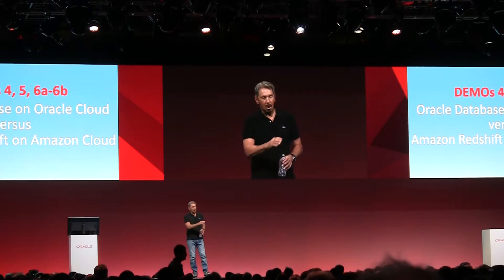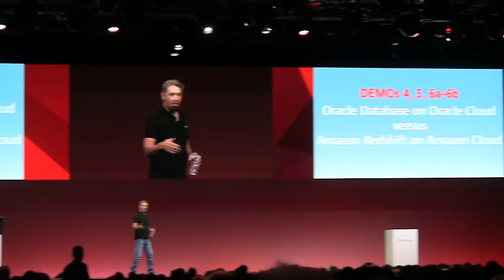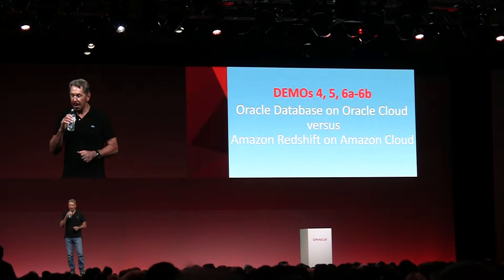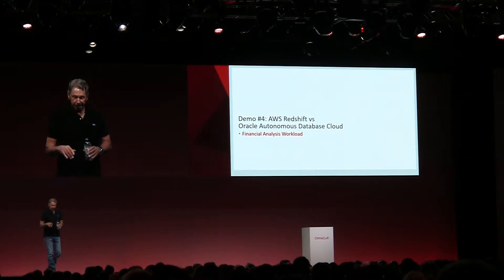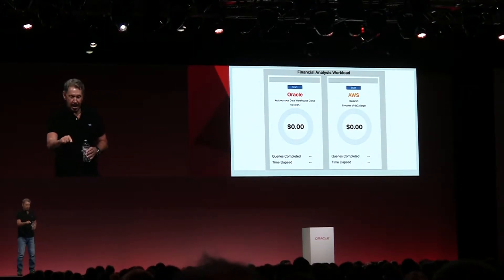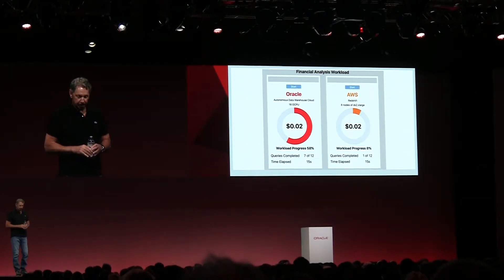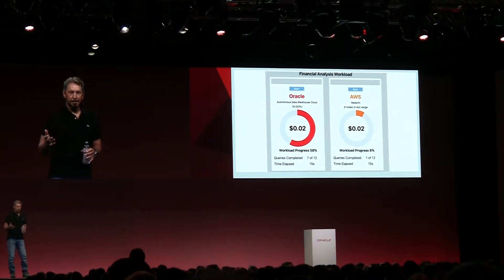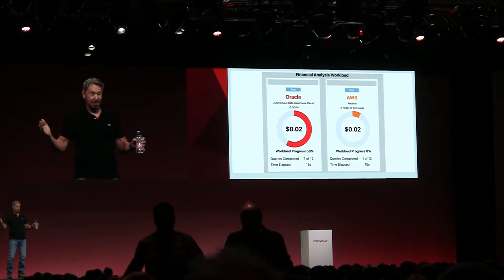This is Oracle Autonomous Database in the Oracle Cloud versus Amazon Redshift in the Amazon Cloud. Let's look at demos four and five — starting with a financial analysis workload. Hit AWS first, then hit start on Oracle. 15 seconds in, we've both spent two cents. The price per second isn't that different — pretty interesting.